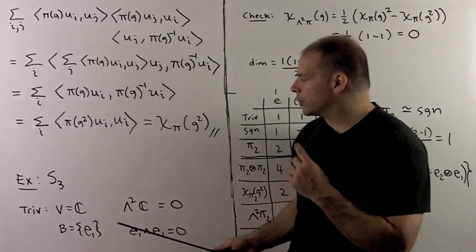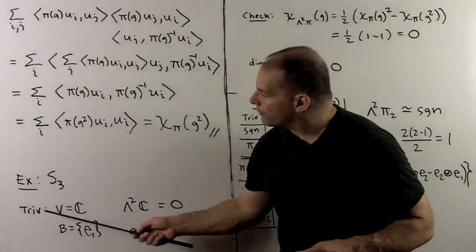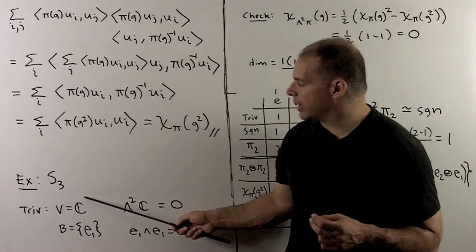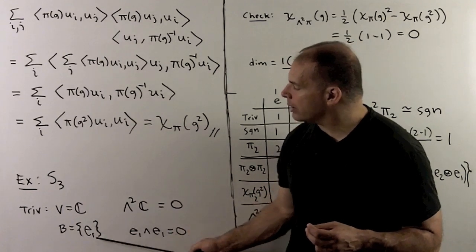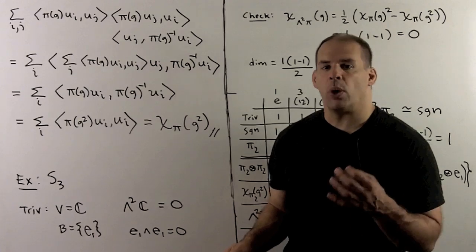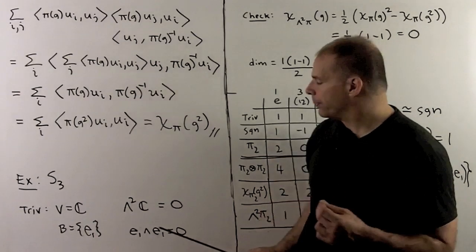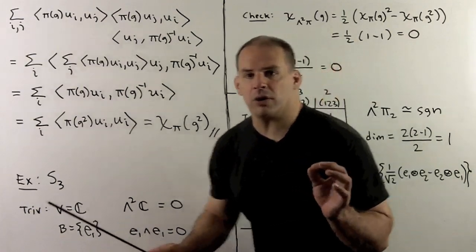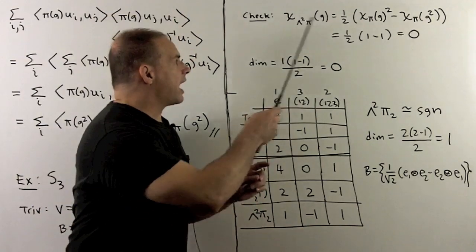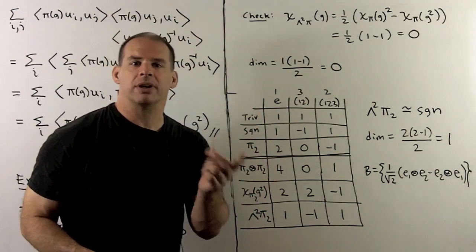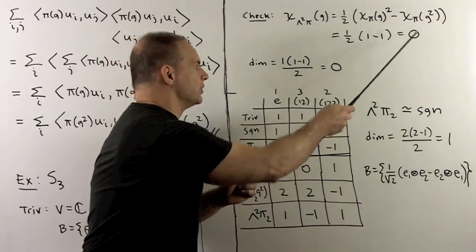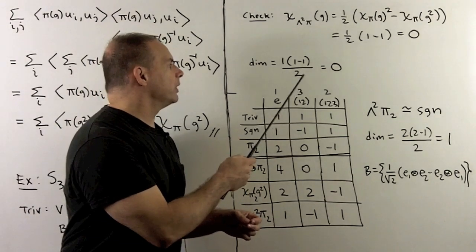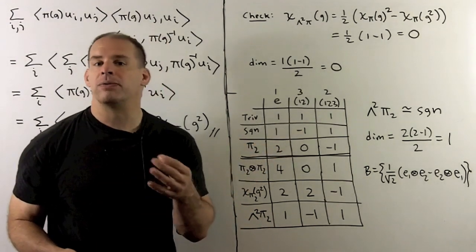To apply this to examples, let's consider S3. First, we have the trivial representation. Our vector space is the complex numbers. The orthonormal basis has e1, which is just the number one. If we take the wedge of e1 with itself, we get zero, so all alternating two-tensors here are zero. If we check our formulas for the character, whatever I put into the trivial representation comes out as one, so we get one minus one equals zero. If we check dimensions, n(n-1)/2 with n equal to one gives zero again. So our formulas are consistent.